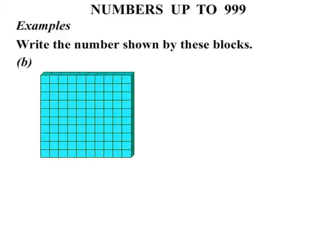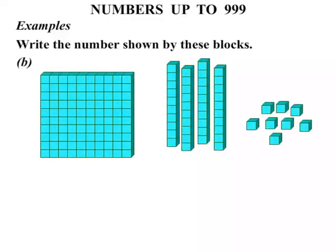Part B. We have 1 flat, a few longs, and some shorts as well. So we just got the 1 flat, so that is just 100. These longs are worth 10 each, so we have 10, 20, 30, 40. So let's write the 40 down. And these shorts, just ones. Count in ones: 1, 2, 3, 4, 5, 6, 7, 8. So let's write the 8 down. So what have we got? We have got 100 plus 40, that is 140, plus another 8, equals 148.